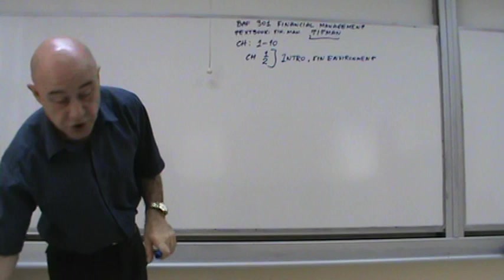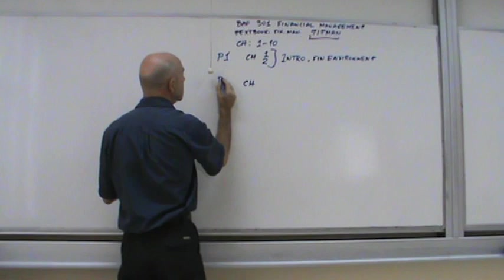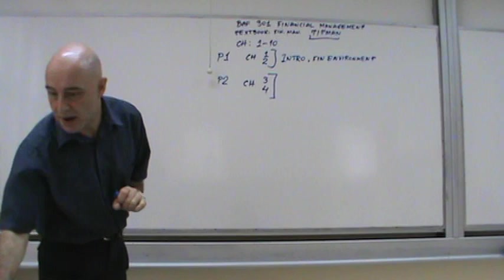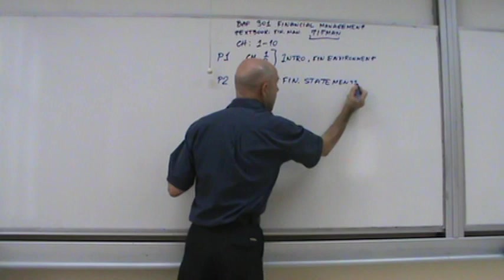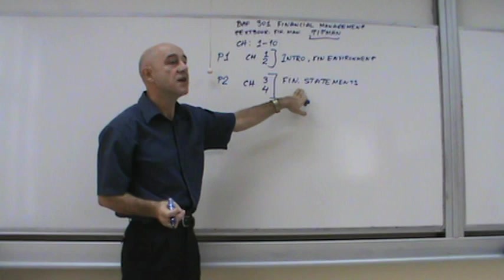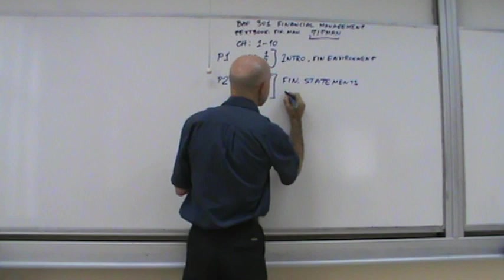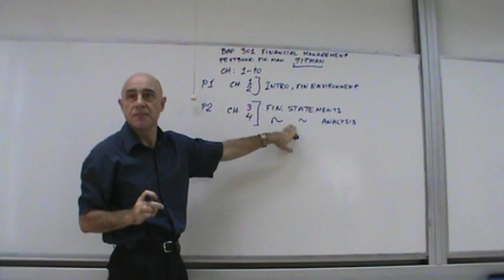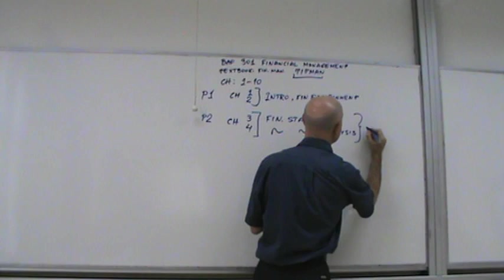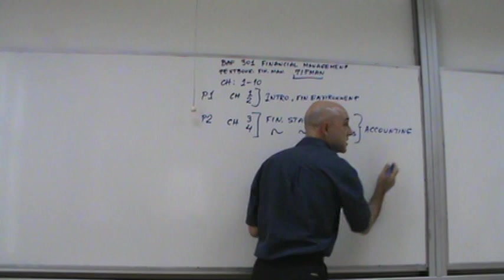And the financial environment is basically a little introduction to financial markets, to financial institutions, maybe to some basic financial instruments. This will get you up and started. Number 2, or let's call it part 1, part 2 will be chapters 3 and 4. And chapters 3 and 4 will be financial statements. Financial statements, that will be the balance sheet, the income statement, cash flow statement, and this will be essentially accounting.